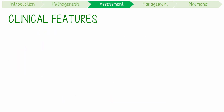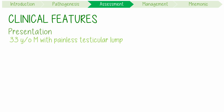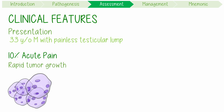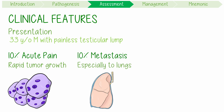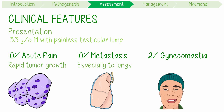Clinically, the most common presentation of testicular cancer is a 33-year-old man with a painless testicular lump. However, 10% have acute pain from rapid tumour growth, which may cause intratesticular haemorrhage. 10% present with signs of metastases, especially to the lungs. 2% present with gynaecomastia because of high levels of beta-HCG secreted by the tumours.